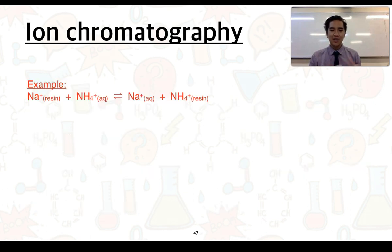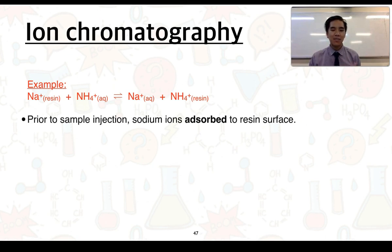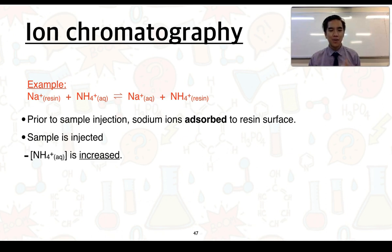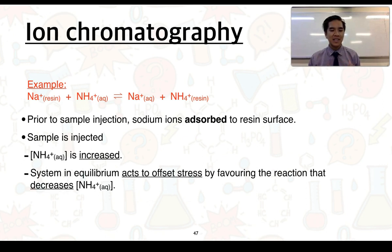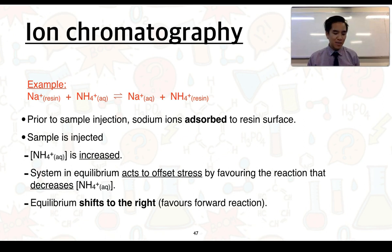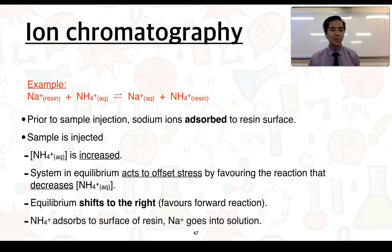Let's apply that understanding to this example. Prior to injecting our sample of interest, we have sodium ions adsorbed to the resin surface from our mobile phase. We then inject our sample, which increases the concentration of ammonium ions in solution. This affects the system in equilibrium, and the system is going to act to offset this increase in concentration by favouring the reaction that will decrease it. We can therefore say that equilibrium is going to shift to the right — more ammonium ions in solution are now going to be adsorbed to the surface of the resin, and the sodium that was previously adsorbed will then go into solution. This is allowing for that exchange process to take place.